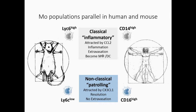Some really nice, eloquent in vivo imaging has shown that actually the non-classical monocytes sort of roll along the endothelial wall. And they adhere using the CX3CL1 axis. And they are basically patrolling, looking for any damage to the endothelium, and actually involved in resolution. They're extremely hard to track, because there are very few of them. And they also stick to the endothelium.